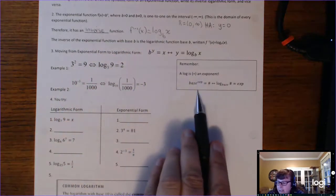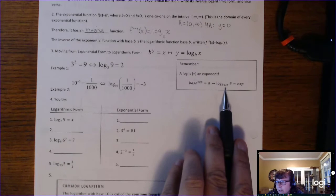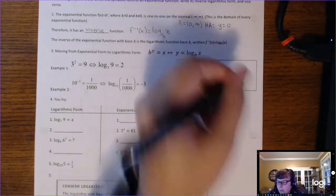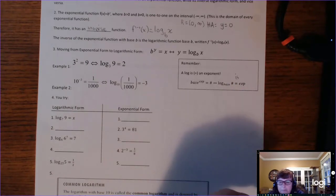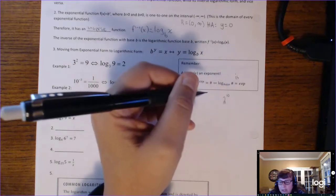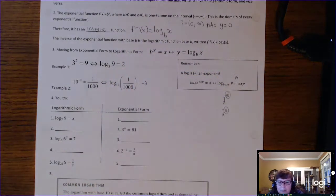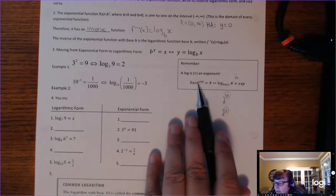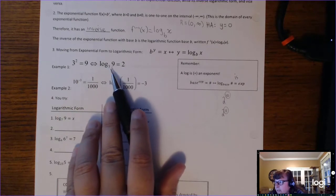A log is an exponent. If you have a base to a power — an exponent — equals a number, that's equivalent to log subscript base of the answer equals the exponent. Exponentials can get very large numbers; 2 to the 10 is a very large number. So if we want to talk about very large numbers, we use logs and only talk about their exponents. To rewrite 3 squared equals 9 in log form: log base 3 of 9 equals 2.